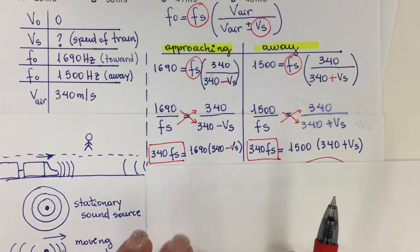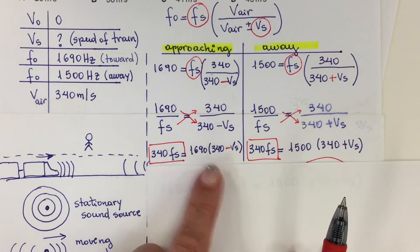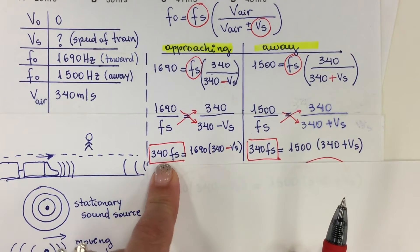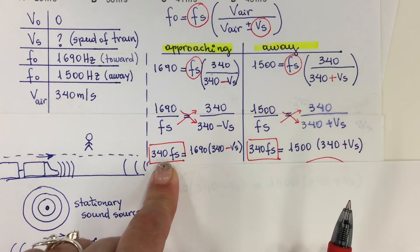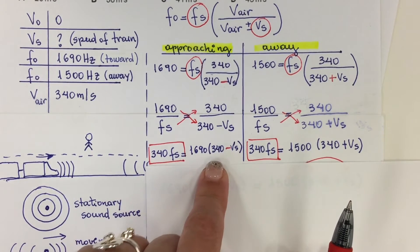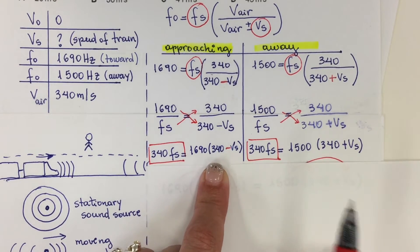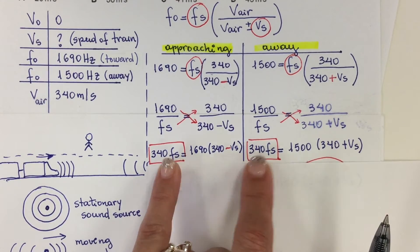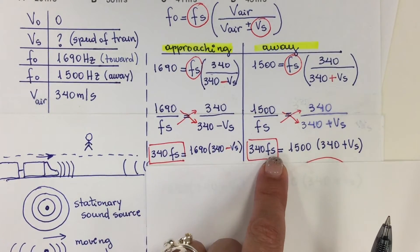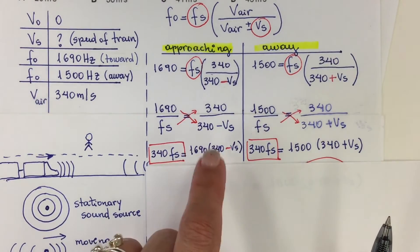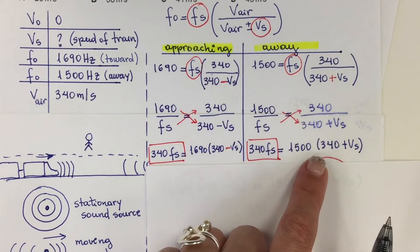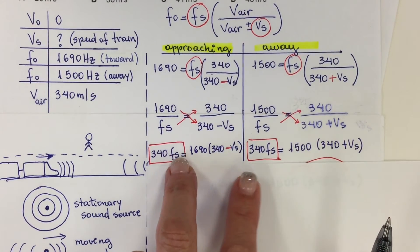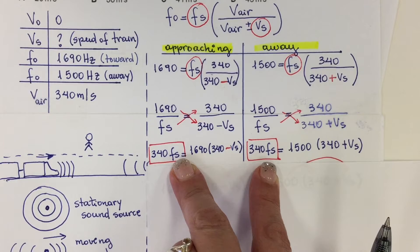Now, since both rearranged equations share the same left-hand side expression set equal to Fs, and since the right-hand sides of both equations are also equal to the same quantity, I can equate them directly. This allows me to eliminate Fs entirely from the equation.